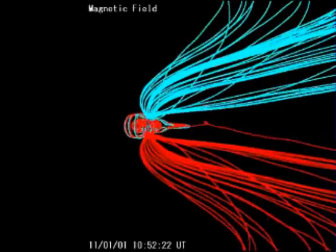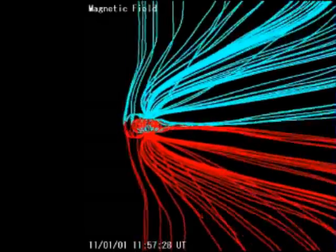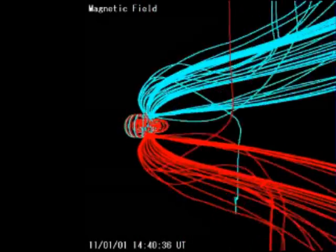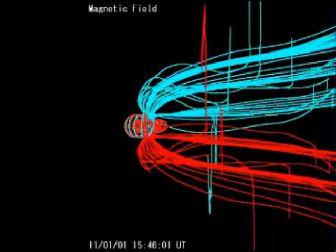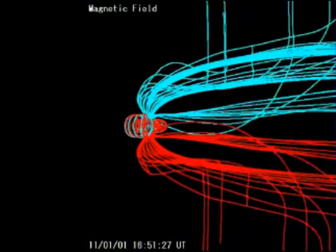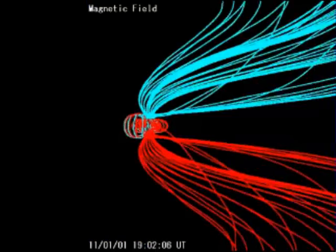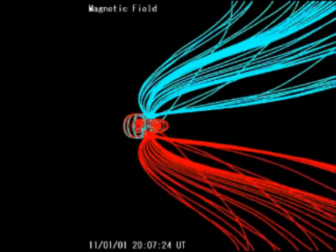These northern IMF events don't actually trigger geomagnetic storms, notes Raeder, but they do set the stage for storms by loading the magnetosphere with plasma. A loaded magnetosphere is primed for aurora borealis, power outages, and other disturbances that can result when, say, a coronal mass ejection hits.